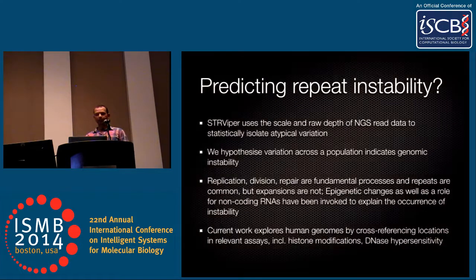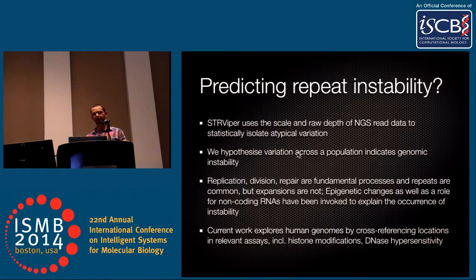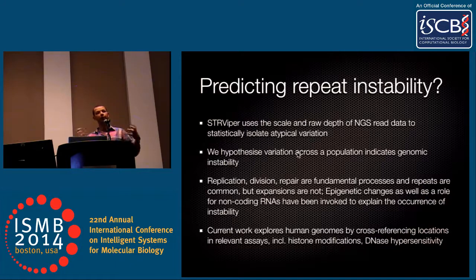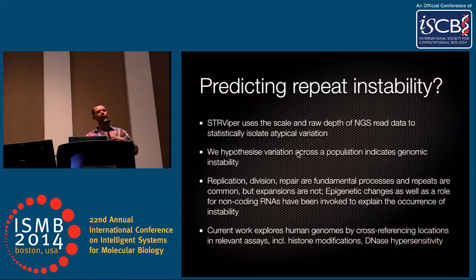To summarize, we hypothesize that variation across the population indicates genomic instability. This is really to get a handle on finding the cause of these instabilities, since replication, division, and repair are fundamental processes associated with repeat instabilities. Short tandem repeats are common but expansions are not, so there needs to be more context. We're currently trying to find the possible influence of those contextual factors using this method to make assessments about variability.